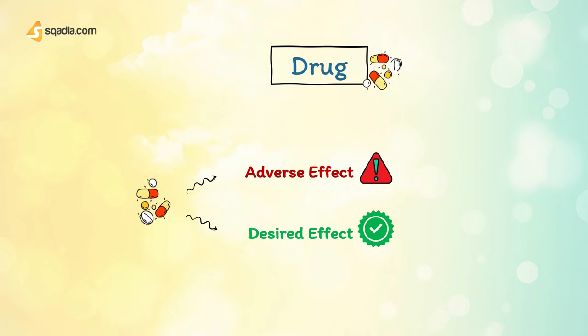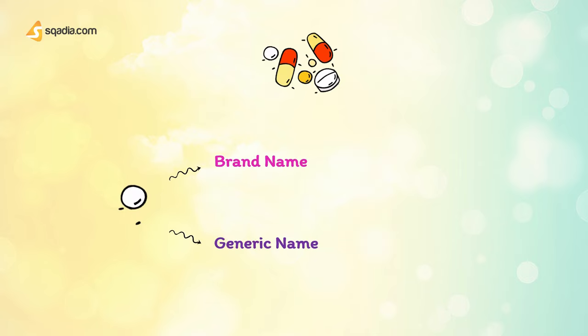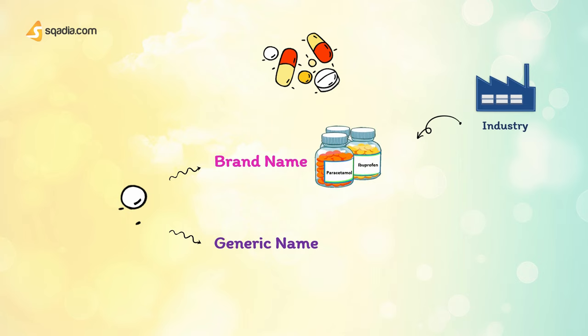Let us talk about drug names and classification. A single drug can have a variety of names and belong to many classes. If we simplify, a drug usually has two names: brand name and generic name. The brand name is given by the company that makes the drug and is usually easy to say for sales and marketing purposes. The generic name, on the other hand, is the name of the active ingredient.